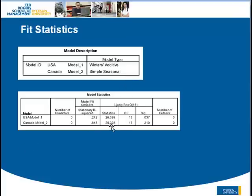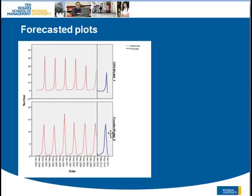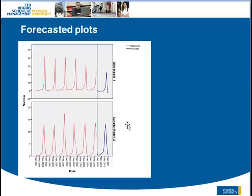The model fits are produced as part of the forecast output. I asked SPSS to produce a 12-month forecast. You can see the forecast in blue and the observed data in red — all generated automatically. There's not much to be done other than knowing how to interpret the results.